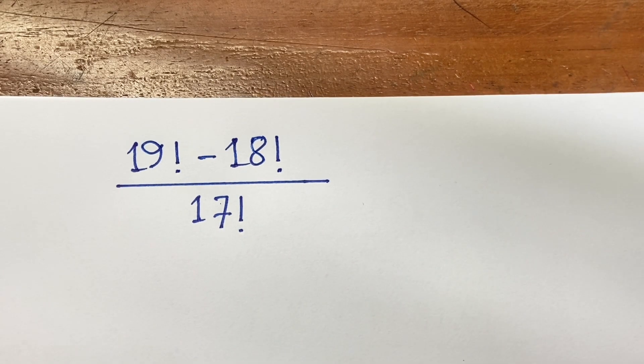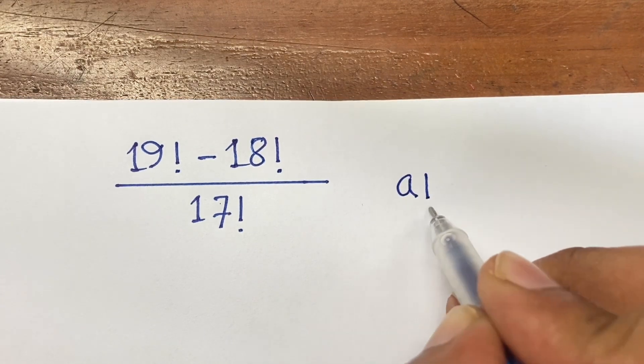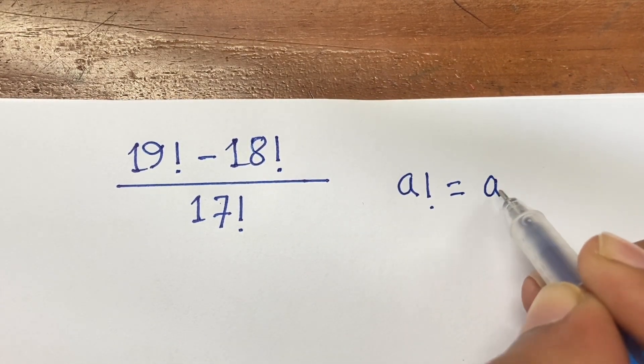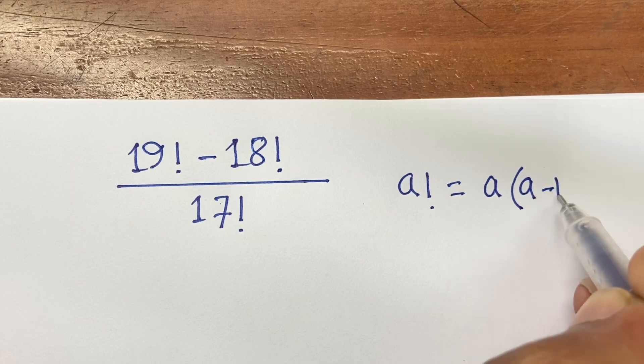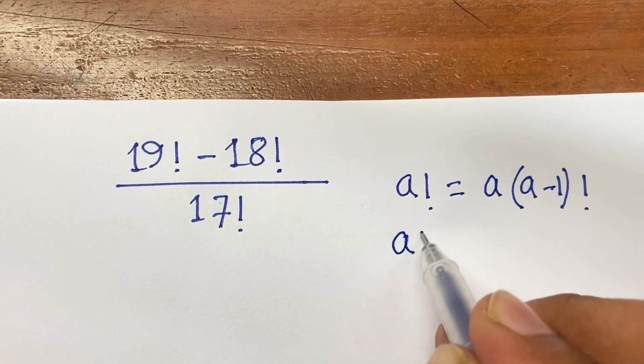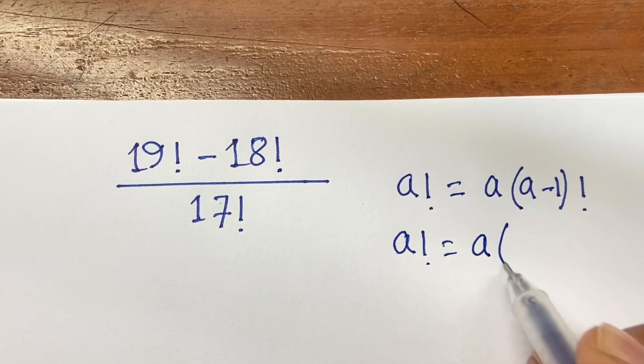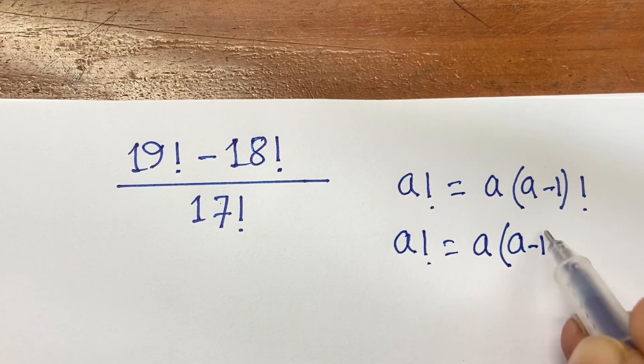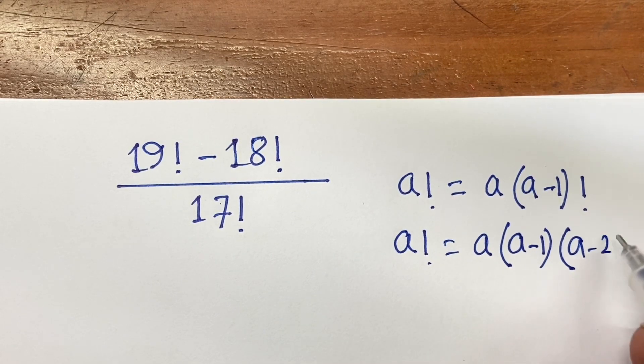So according to factorial rules, we know that A factorial equals A times A minus 1 factorial. And again, I can say A factorial equals A times A minus 1 times A minus 2 factorial.